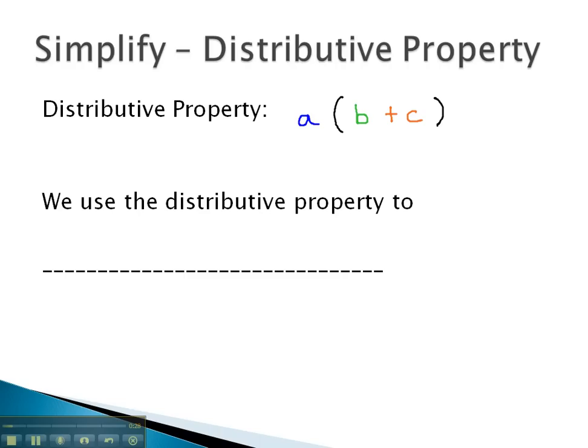What we are allowed to do is take that front number and multiply by what's inside the parentheses. A times the b, and also multiply that a times the other term in the parentheses, giving us positive a times the c.